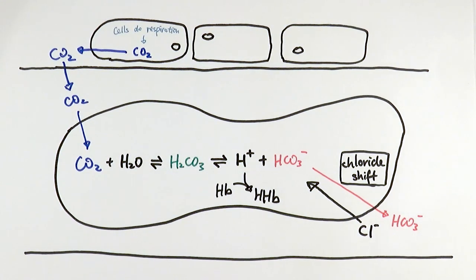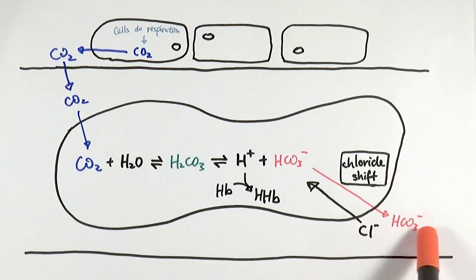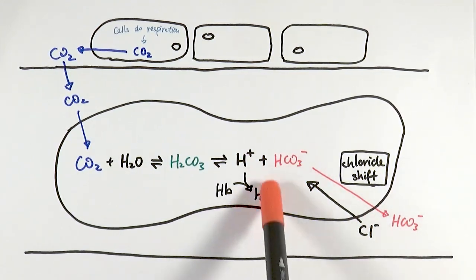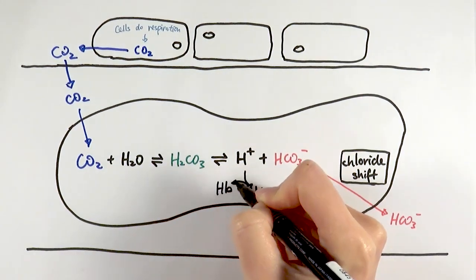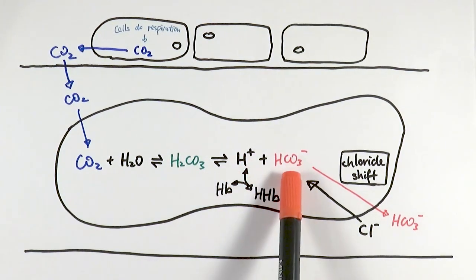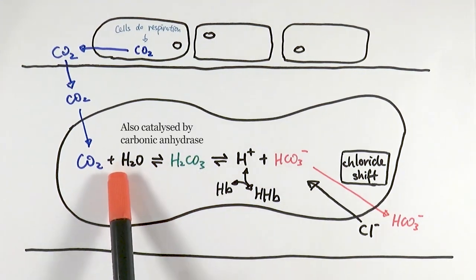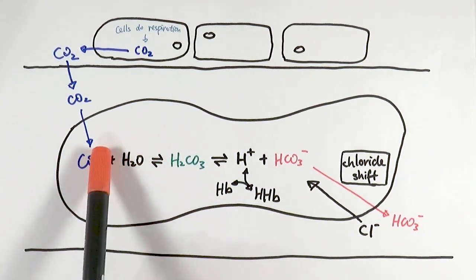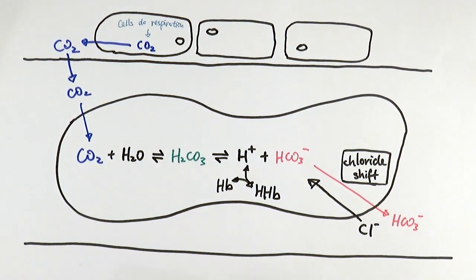The red blood cell then travels along the bloodstream until it gets back to the lungs, where the whole process reverses. The chloride ions come back out, the hydrogen carbonate ions go back in, and hemoglobinic acid dissociates into hydrogen ions and hemoglobin. The hydrogen ions and hydrogen carbonate ions then bind together to reform carbonic acid, which separates into carbon dioxide and water. The carbon dioxide diffuses into the plasma, then into the alveolar fluid, into the alveoli, and is finally breathed out of the body.